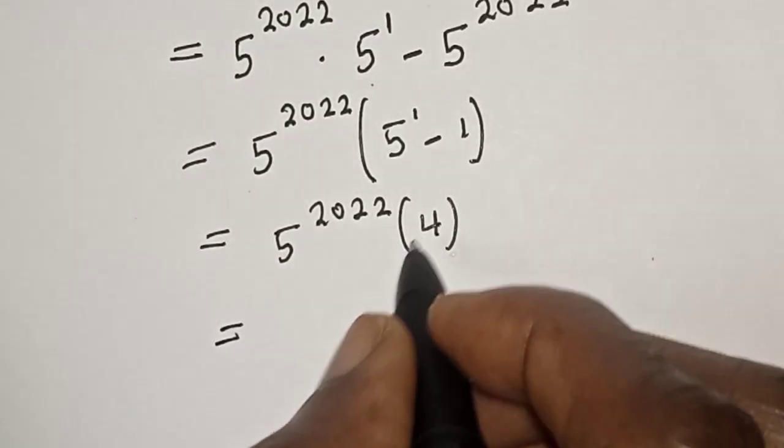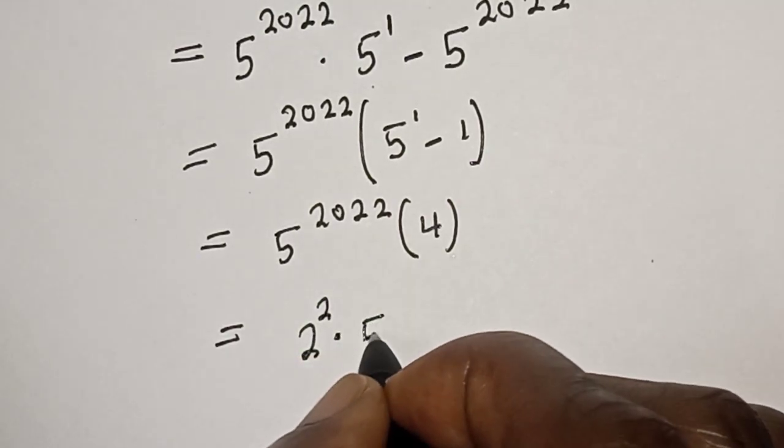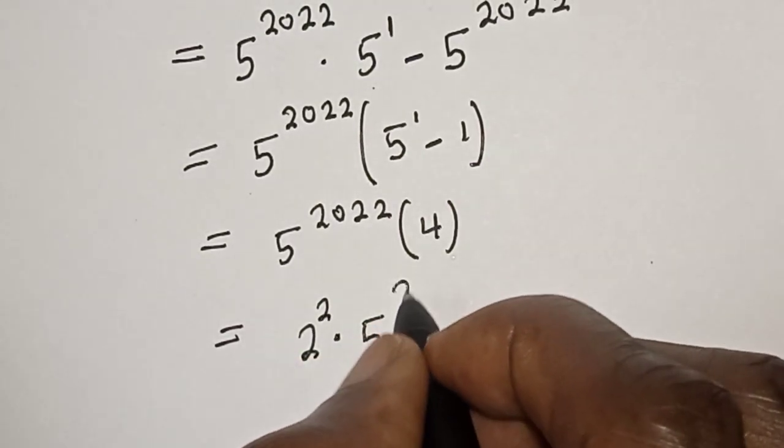So this equals 4, which is 2 squared, multiplied by 5 raised to power 2022.